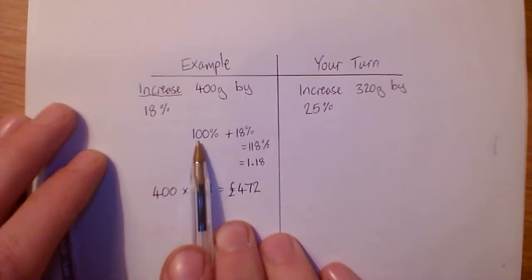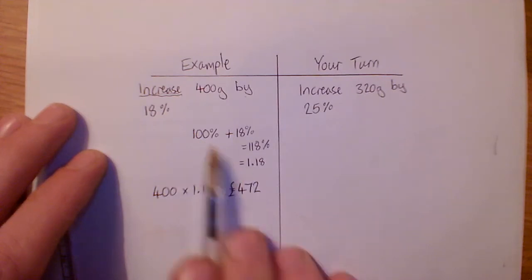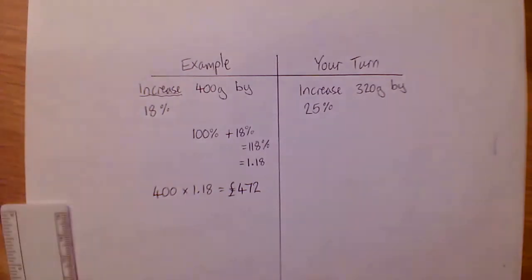So we've got two steps here. First is to work out the decimal we need to use, and the second one is like everything we did last week where we times our amount by the decimal that we're using. So have a go at your turn. Pause the video, see whether you can do it, and I'll run through the answer in just a moment.